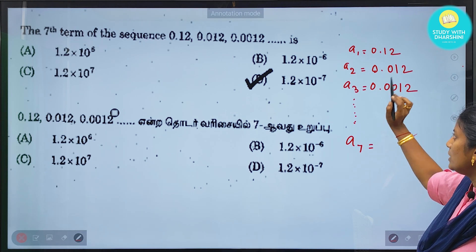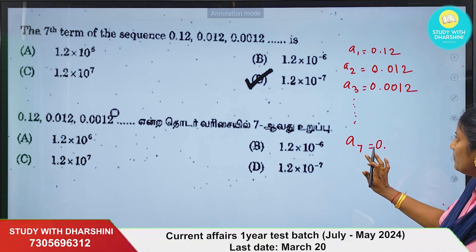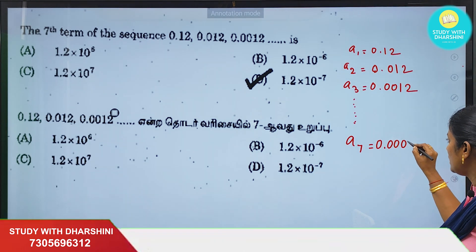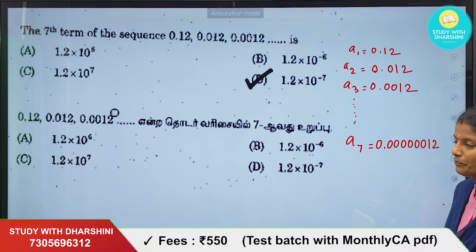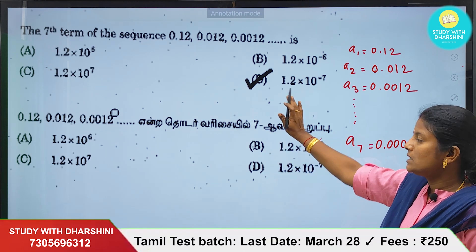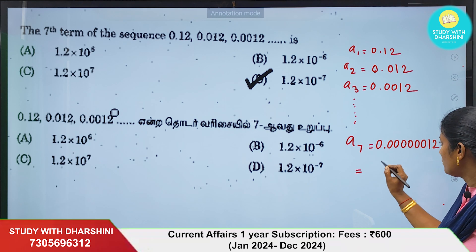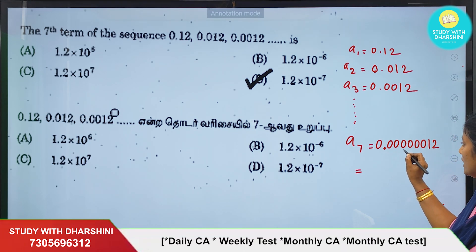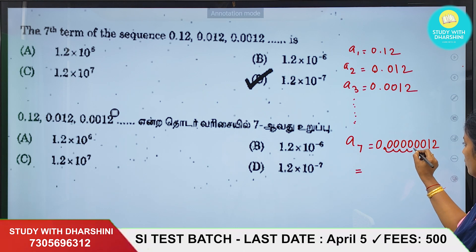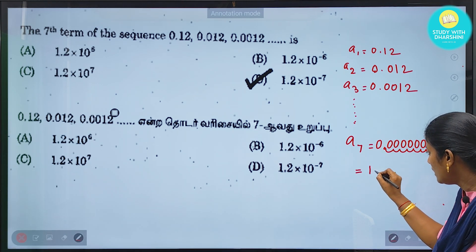A2 is 0.012, A3 is 0.0012. Let's use the trick and formula to find A7. We apply the formula — counting positions 1, 2, 3, 4, 5, 6, 7 — with the ratio of 0.1 (multiplying by 0.1 each time, so it's a GP with common ratio 1/10).